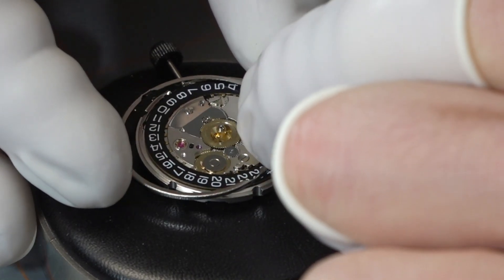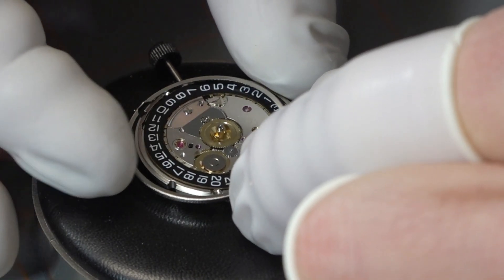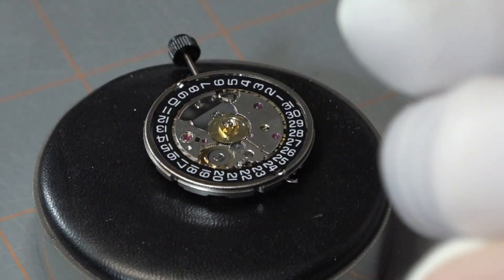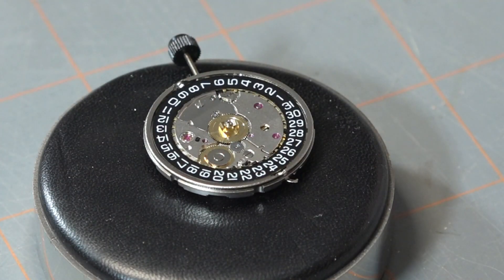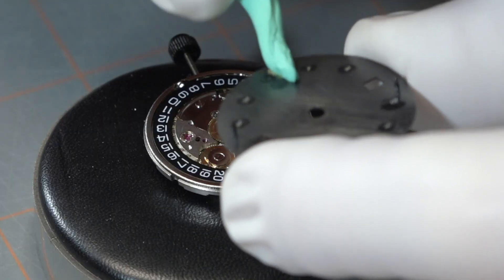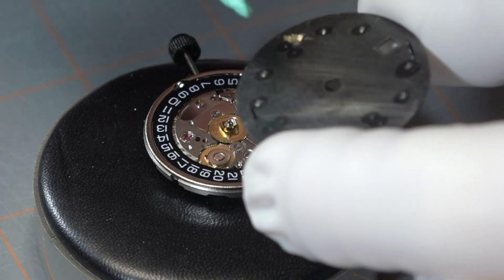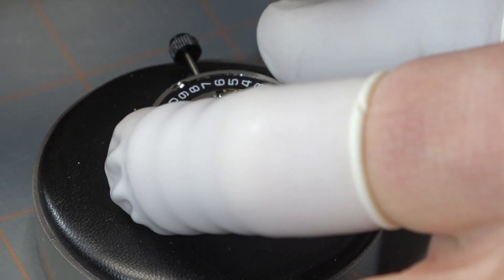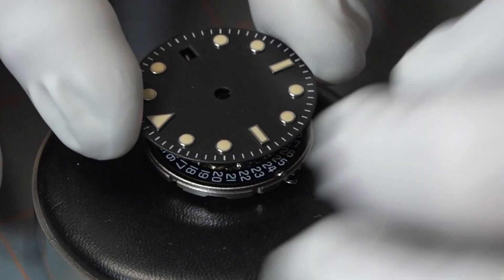The next part that goes on is the date wheel spacer, and this part basically makes sure that there is enough space between the date wheel and the back of the dial so the date wheel can turn freely.